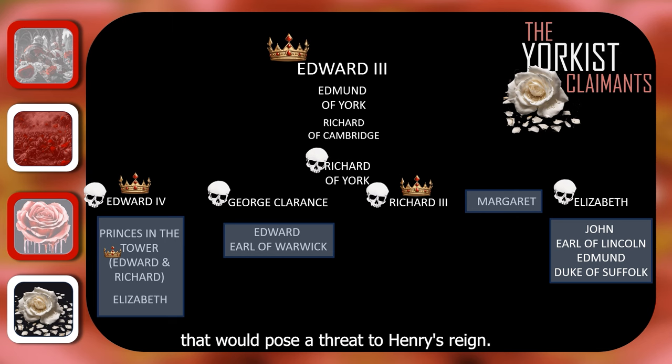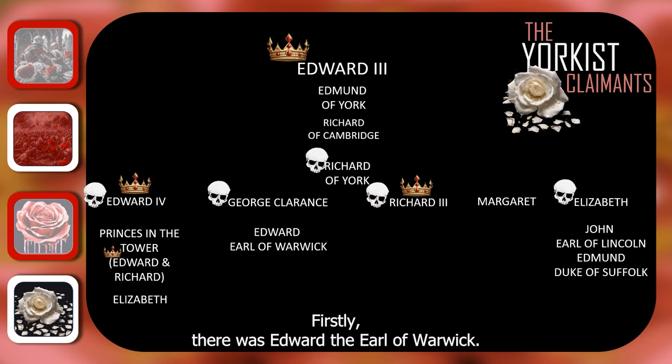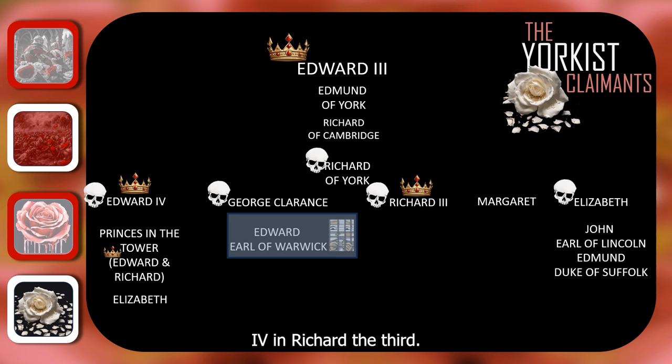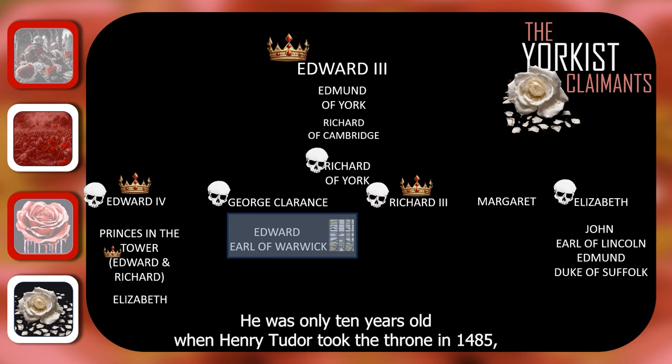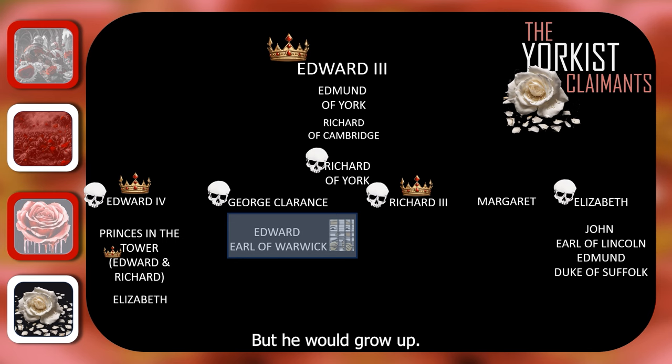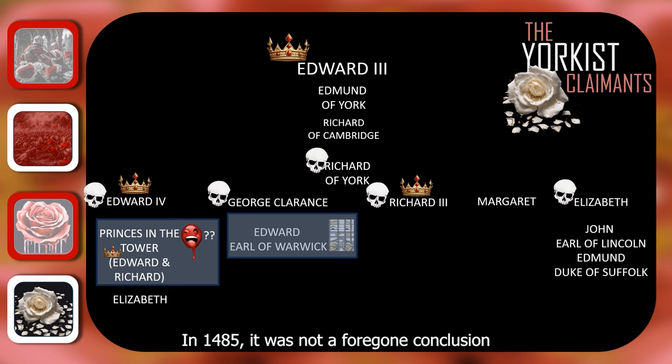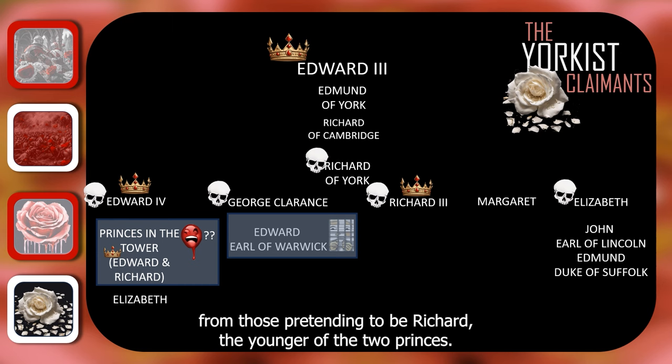Highlighted here are the key Yorkist players that would pose a threat to Henry's reign. Firstly, there was Edward the Earl of Warwick, son of George Clarence and nephew to Edward IV and Richard III. He was only ten years old when Henry Tudor took the throne in 1485 and he was imprisoned in the Tower of London — but he would grow up. There were also the two missing princes in the Tower. In 1485, it was not a foregone conclusion that they had been murdered at the hands of their uncle Richard III, and as a result Henry VII would have to fight off threats from those pretending to be Richard, the younger of the two princes.